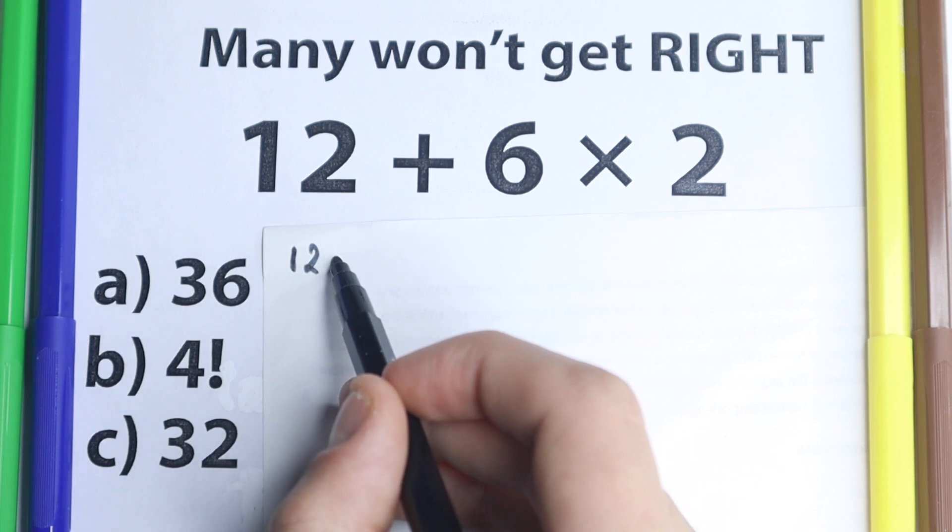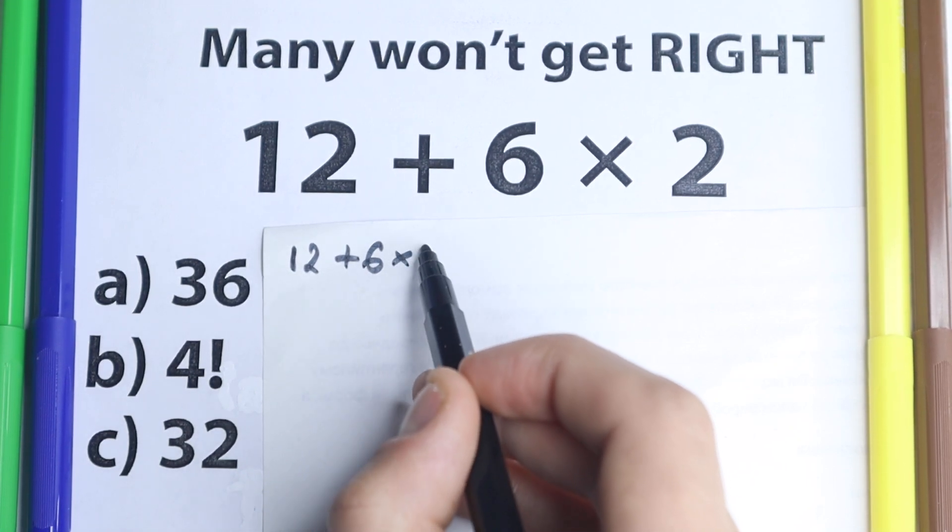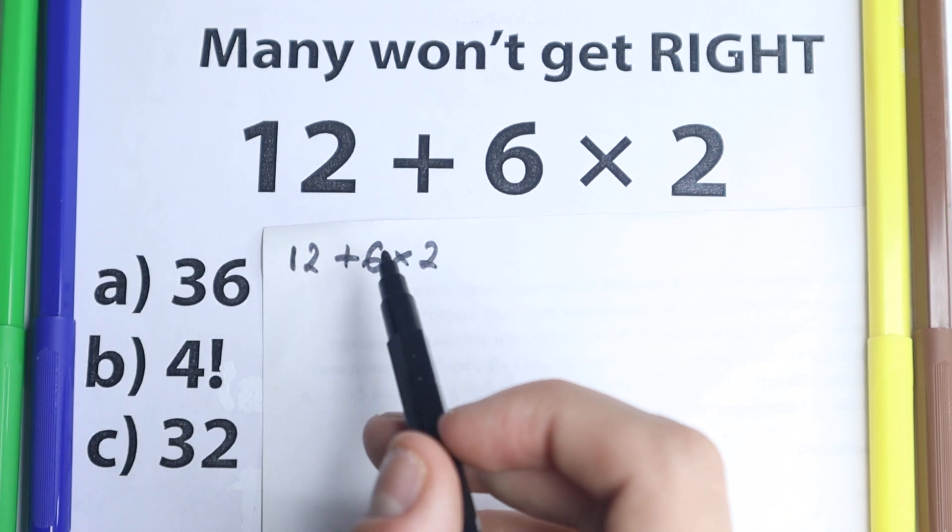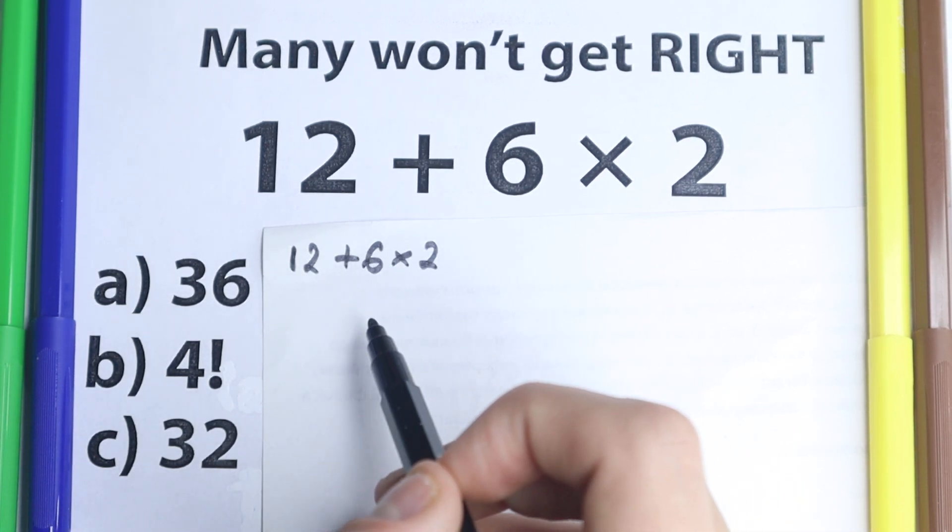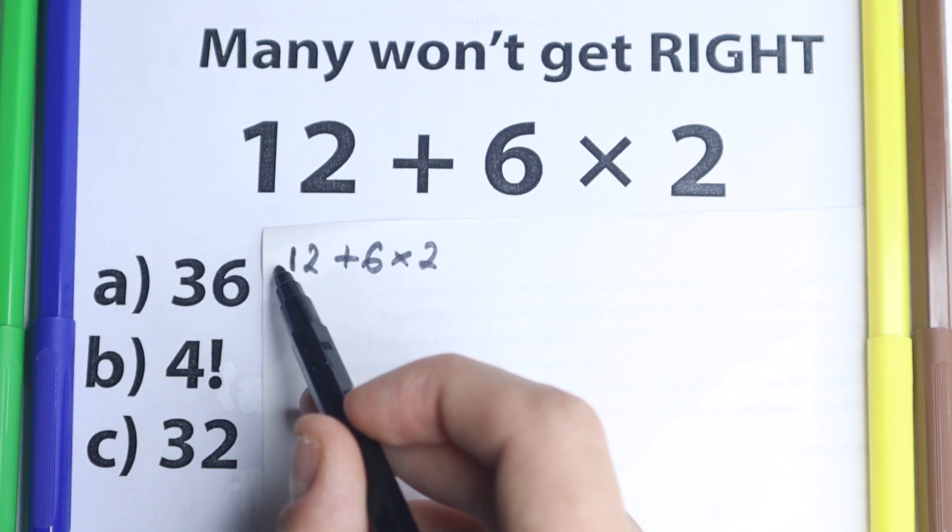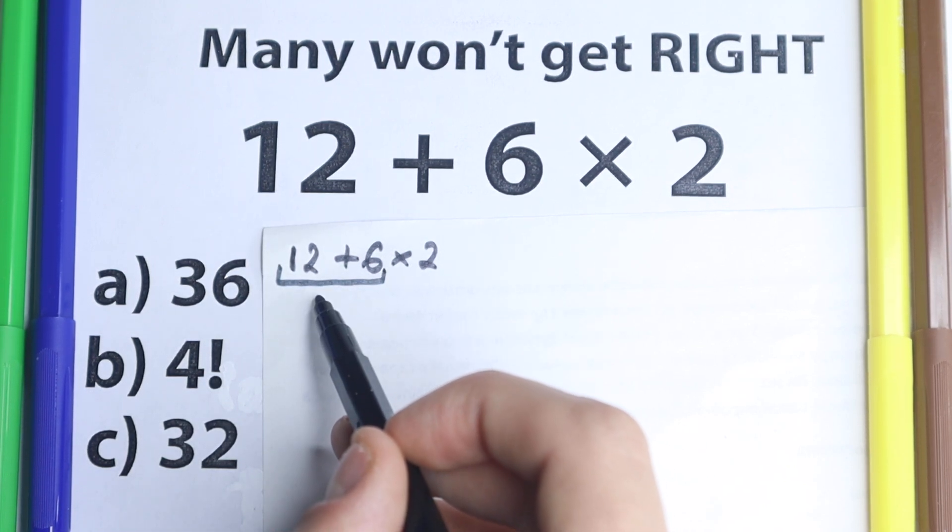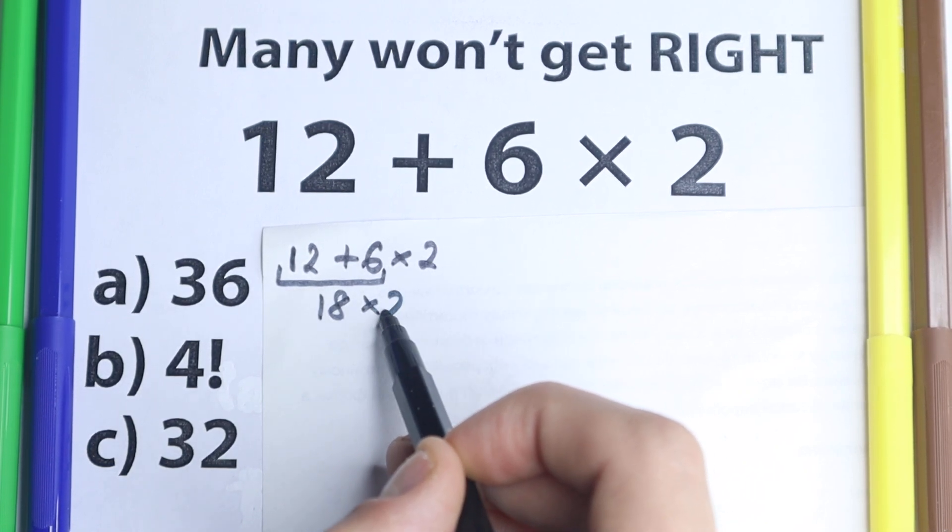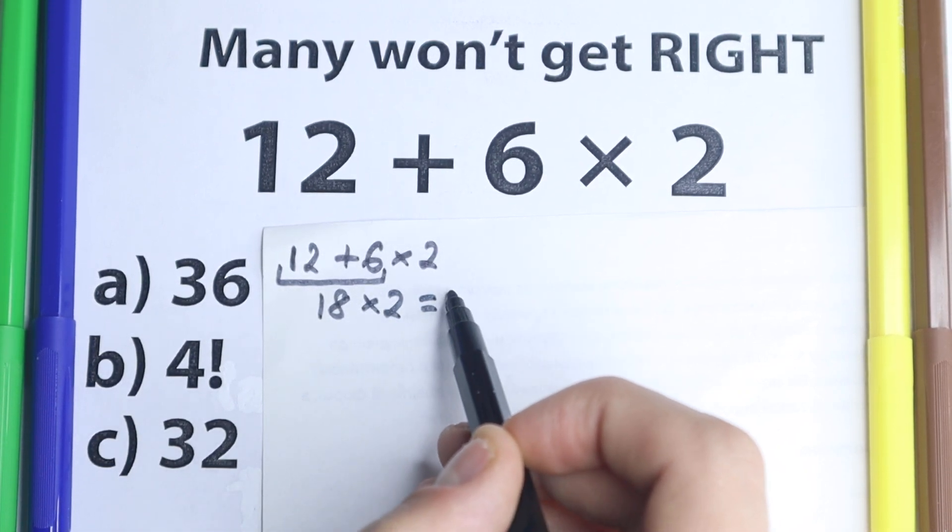We have 12 plus 6 times 2. I want to show this approach. I don't want to tell that this is correct or incorrect, but part of students solve it like that. So we have 12 plus 6 times 2. A lot of students go from left to right. We have 12 plus 6, which is equal to 18, and we still have this multiplication, so 18 times 2 equals 36.